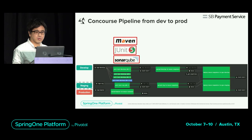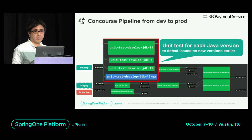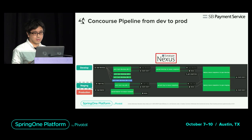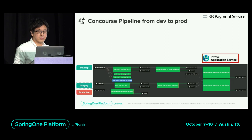Moreover, the unit test is executed in various versions of Java so that the effect of updates can be detected in advance. Applications that pass unit tests will be deployed to the Nexus repository and become ready for release. The next job deploys to the development environment PAS and it can be checked immediately. The development cycle by CI is realized by repeating this pipeline.